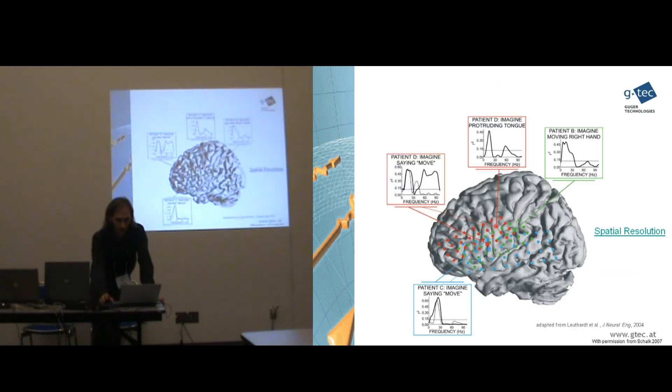Here you can see how good the spatial resolution of ECoG is. We have for example one patient here who is moving his right hand. And one single electrode is coding this information. Another patient is here for example moving the tongue. And a single electrode is coding the information. This patient is saying move. And interestingly for another patient, the move command is also very close to the other patient.